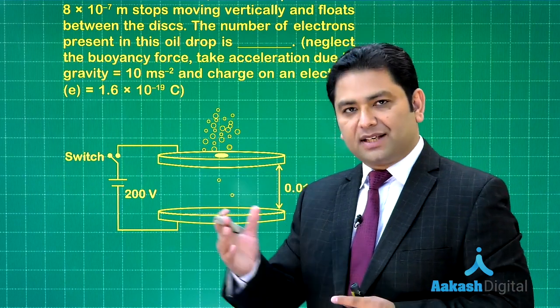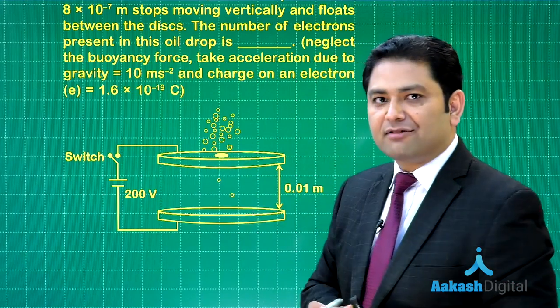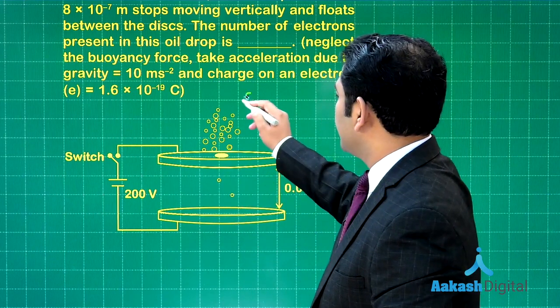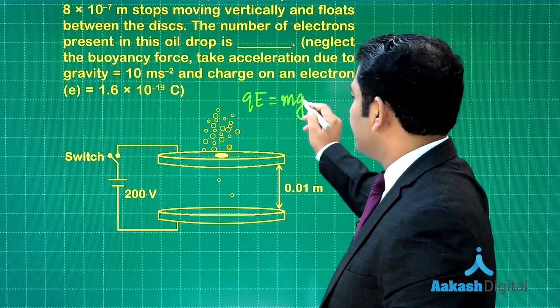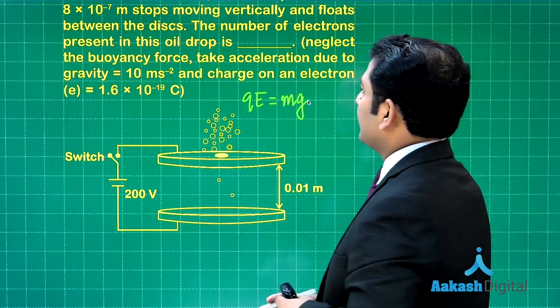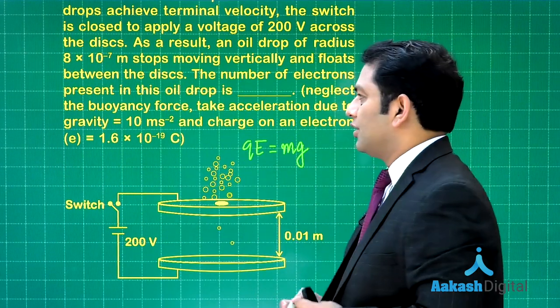Subsequently, the oil drop having this radius stops moving vertically and now it floats. We need to neglect the buoyant force. Initially, terminal velocity was obtained when mg was balanced by the resistive force. Later, when the potential difference is applied, the drop is at rest, so there's no resistive force.